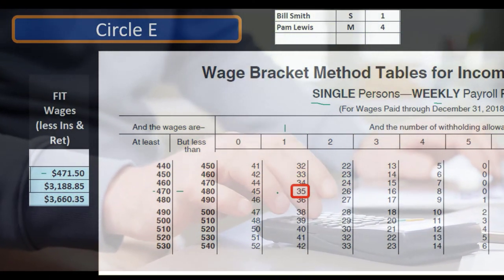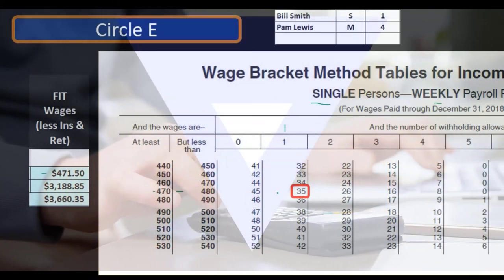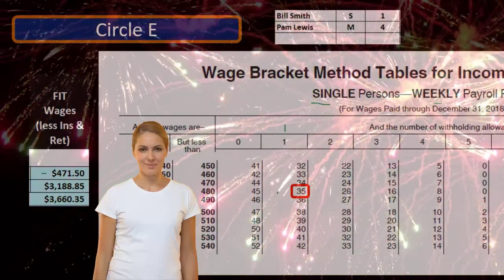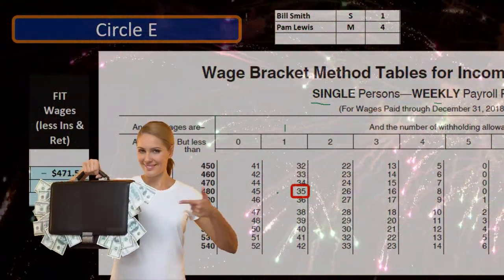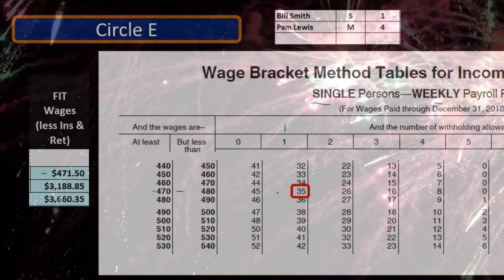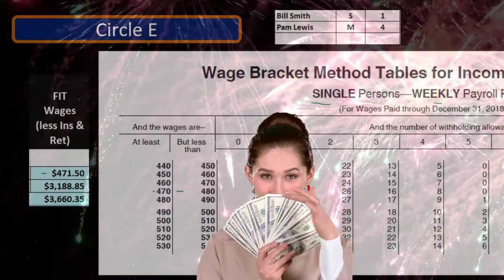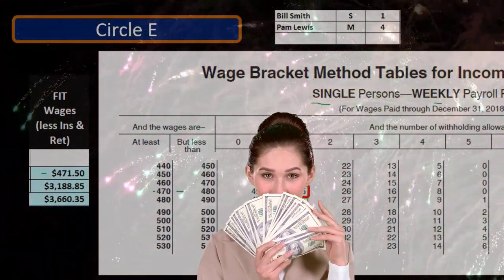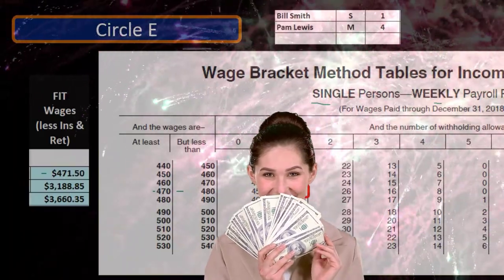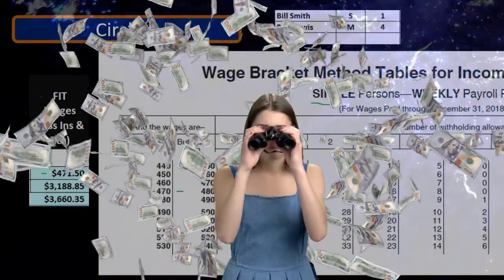Getting a refund is not the objective. The objective is to not pay penalties and interest at the end of the year. If we end up owing a lot, we could pay interest and penalties. Otherwise, it would actually be better to not pay until the end of the year because we get to hold on to our money longer and possibly invest it — which is exactly why the IRS requires these withholdings: they want their money sooner.